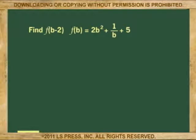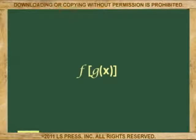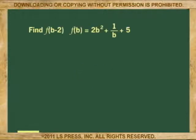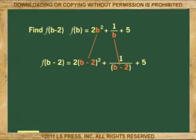By now you get the idea of what a function is and how they are solved. What follows are some more examples of different types of functions, including examples of what is called composition of functions, which is another way of expressing functions within functions, or composite functions. Find function at b minus 2 if the function of b equals 2b squared plus 1 over b plus 5. The function at b minus 2 equals 2 times b minus 2 squared plus 1 over b minus 2 plus 5. This is the new function.